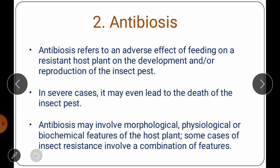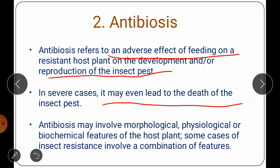The second mechanism is antibiosis. Antibiosis refers to an adverse effect of feeding on a resistant host plant on the development and reproduction of the insect pest. If the insect feeds on and damages the plant, the plant creates an adverse effect on the reproduction and development of that insect. In severe cases, the insect undergoes death. Antibiosis may also involve morphological, physiological and biochemical features of the host plant, and in some cases a combination of features.